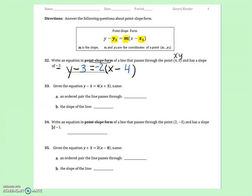And then you're done. That's point slope form. Number 33 takes it backwards. This time it gives you the equation. Now let's name the ordered pair that it passes through. We know that these are the things we're really looking at.